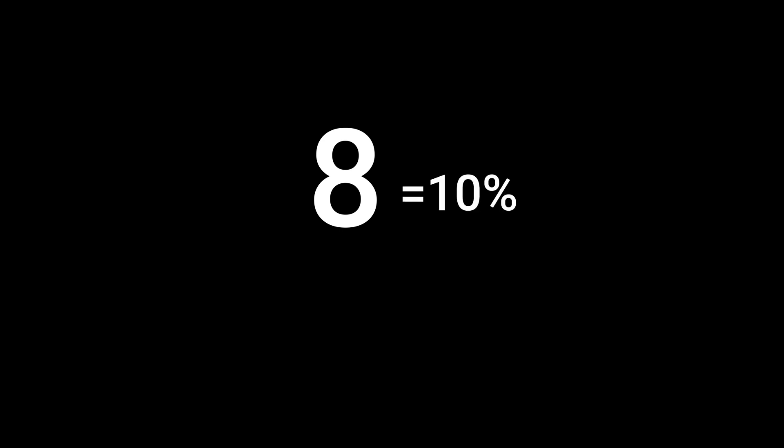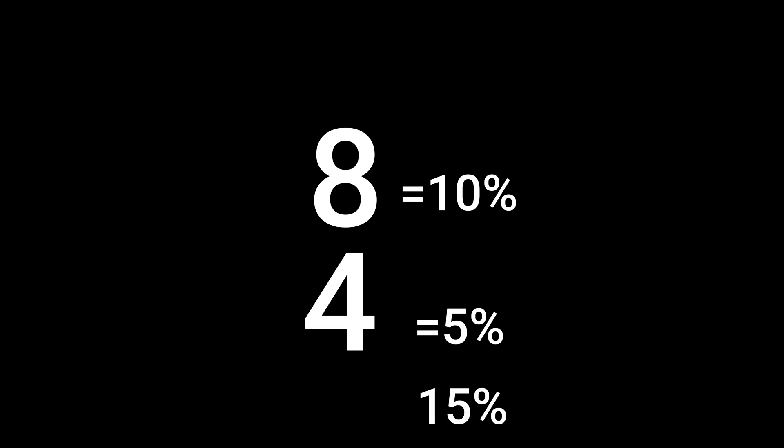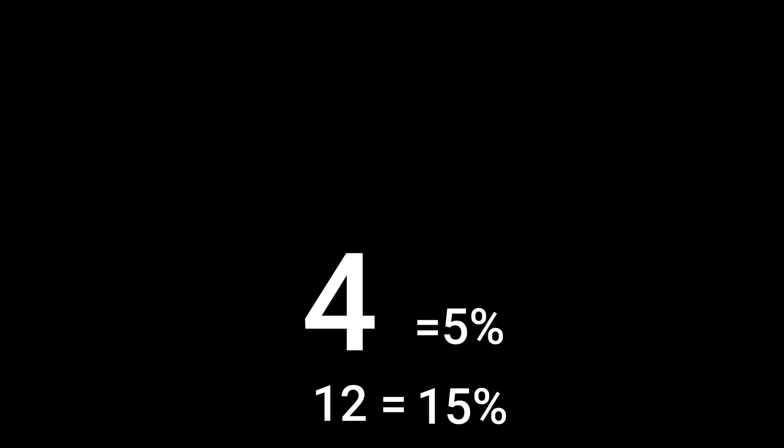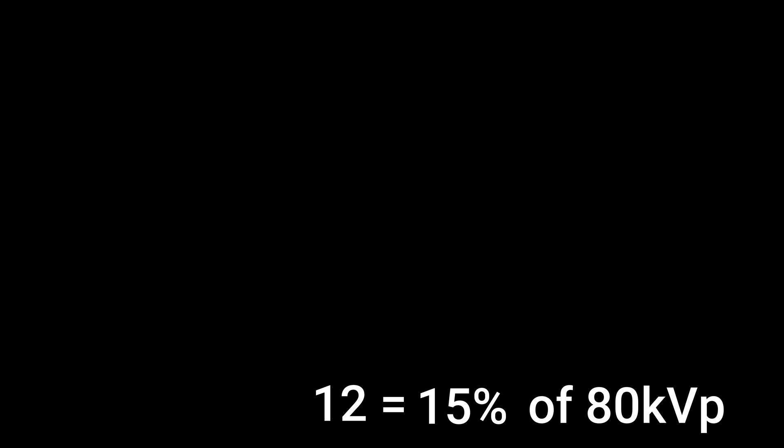Now let's take a look at another example using 80. 10% of 80 — moving the decimal point one place — is 8. You half the 8 to get your other 5%, which is 4. So when you add those two together, 10% plus 5% is your 15%, and 8 plus 4 is 12. So 12 is 15% of 80.